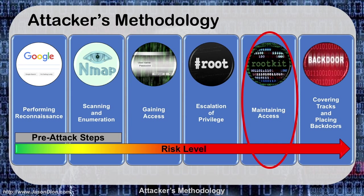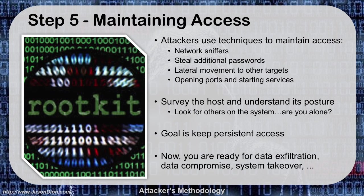Once we've done privilege escalation, the next thing we want to do is maintain our access. If I get one admin account and the admin realizes I was on there, they'll reset the password or delete the account and I'll be kicked out. When maintaining access, I want to start getting additional usernames and passwords, laterally move to other targets — if I got in on Joan's workstation, I want to get to Jim's workstation and spread myself out through the network. I can use network sniffers, steal additional passwords, laterally move to other workstations or servers, open ports in the firewall, and start additional services that will call me back.